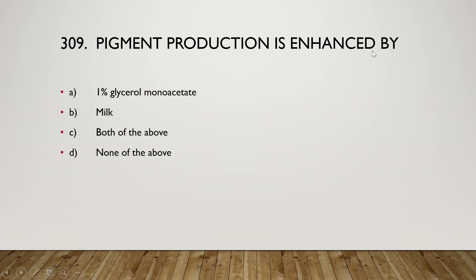The next question: pigment production is enhanced by 1% glycerol, monoacetate, milk, both of the above, or none of the above. Pigment production is enhanced by option C — both 1% glycerol monoacetate and milk.